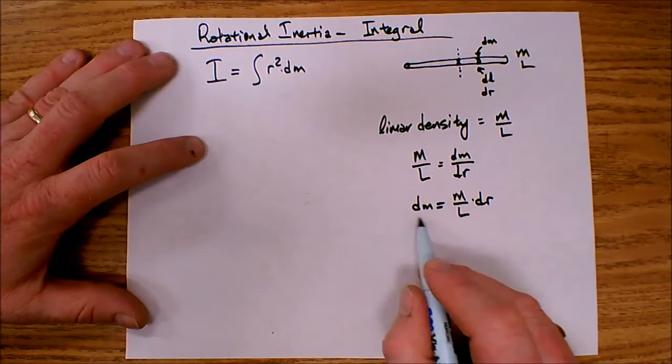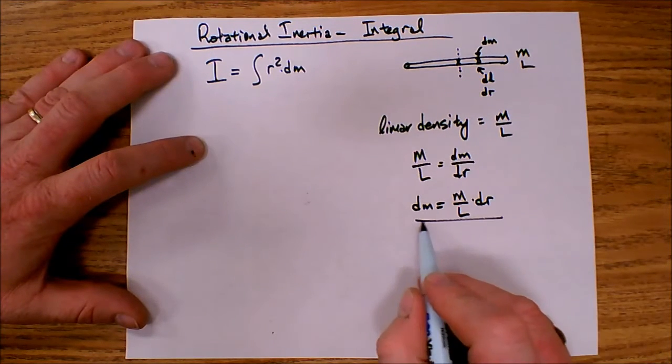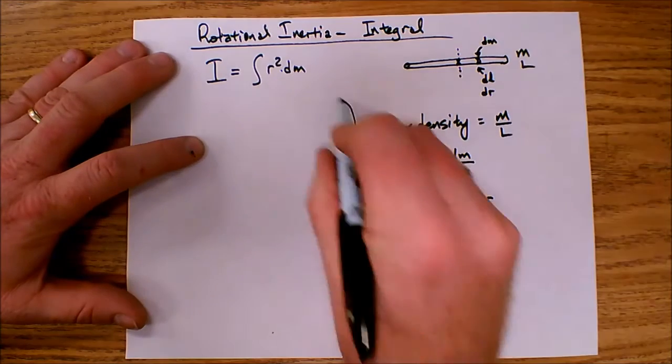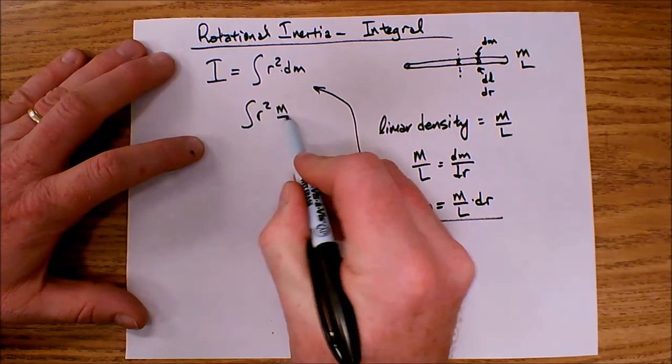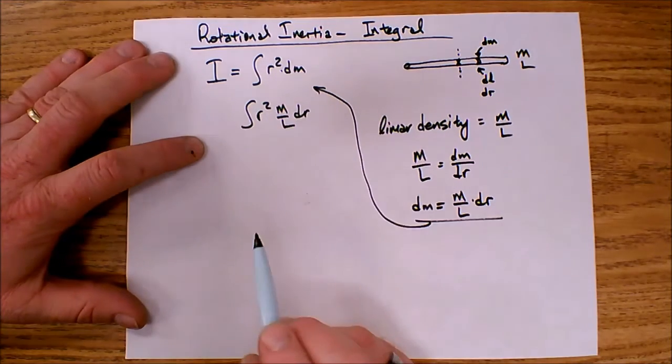So dm is equal to m over l dr. So now I'm going to take this relationship and I'm going to plug it in to my integral r squared m over l dr.